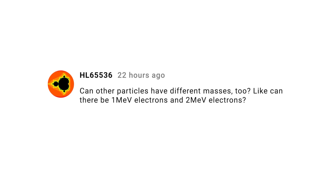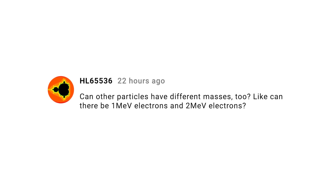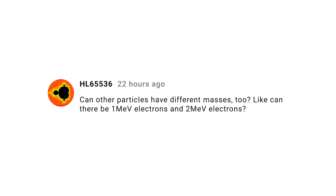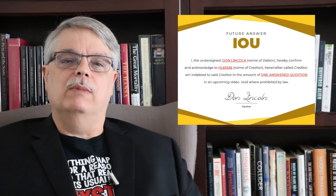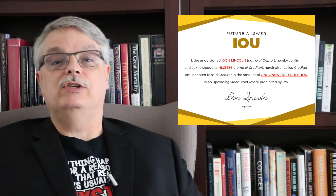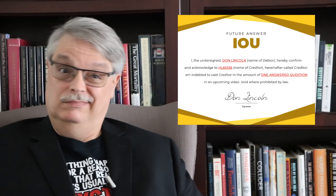HL 65536 asks if other particles can have different masses, like electrons with double or quadruple their normal mass. That's a great question with a lot of complication and nuance. Let me make a video about the Heisenberg Uncertainty Principle first, and I'll answer you in the questions for that video. Deal?